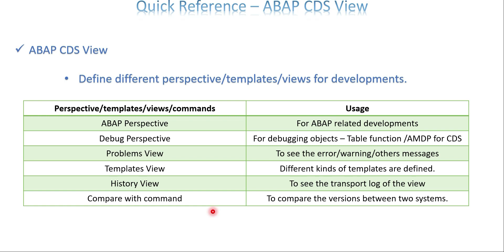At the command level, there is a 'Compare With' option to compare the version of your CDS between two different systems — development, quality, and production — to see what changes occurred. Right-click your view, select 'Compare With', and it lists all relevant servers where your user ID has access. Two windows open showing a side-by-side version comparison, similar to ABAP version comparison in Eclipse or HANA Studio. These are the very basic commands when starting CDS development. Hope this gives some idea of what needs to be prepared at the basic level about CDS. Thank you so much for your time, see you in the next video.